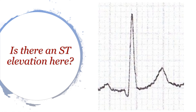What do you think about this particular complex? When we say ST elevation, what I mean is: do you think the J point is above the baseline, at the baseline, or below the baseline? The J point is the junction between the end of the QRS complex and the beginning of the ST segment. If this point is above the baseline, this is ST elevation. If it's at the baseline, it's isoelectric. If it's below, it's ST depression.